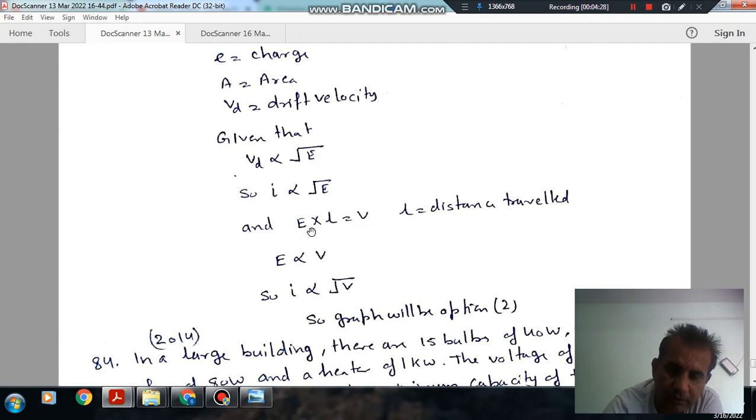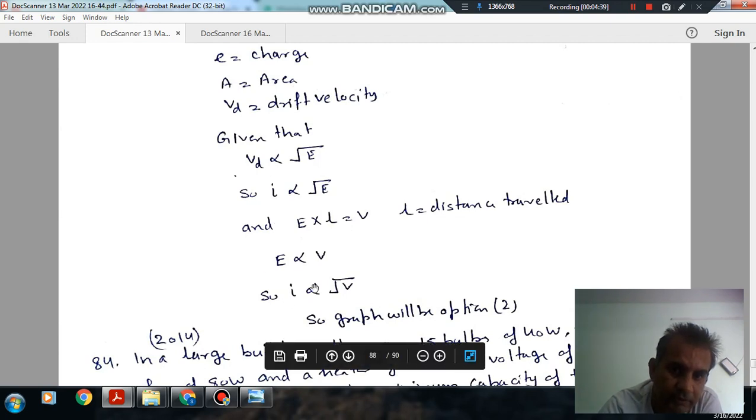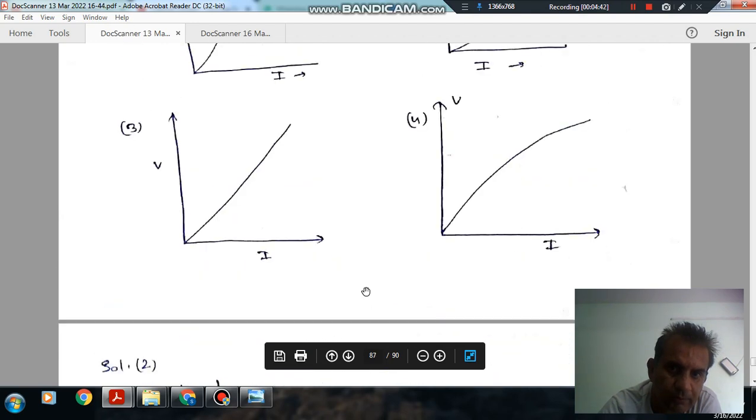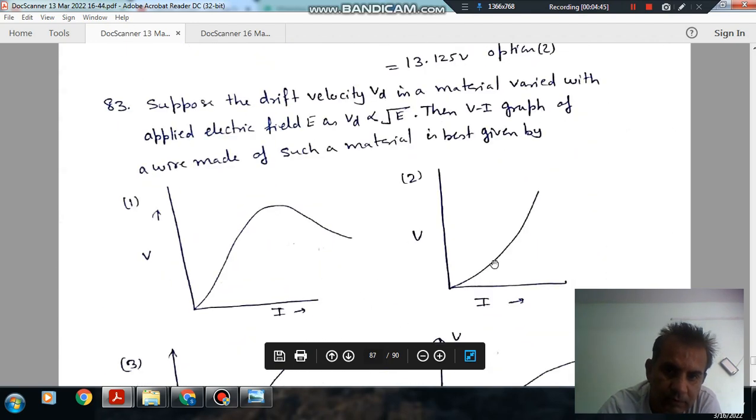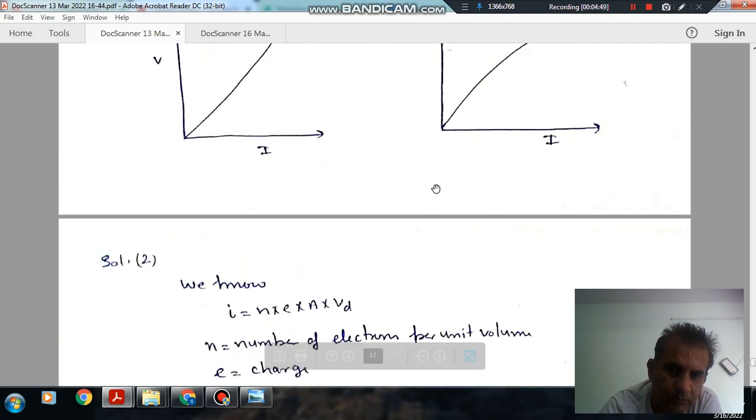E is electrical field and L is distance traveled, so V is proportional to E. So, we can say that current is proportional to voltage root, so option 2. That graph seems to be right, option 2.